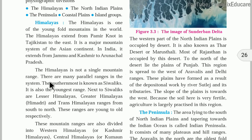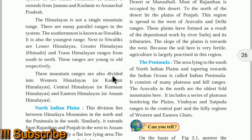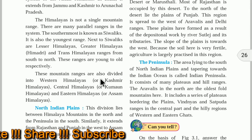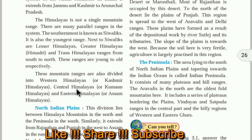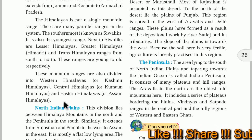The mountain ranges are also divided regionally. The Himalayas in Kashmir are called Western Himalayas or Kashmir Himalayas. In Uttarakhand and Himachal Pradesh, they are called Kumaon Himalayas. In the eastern part, in Assam, they are called Assam Himalayas.